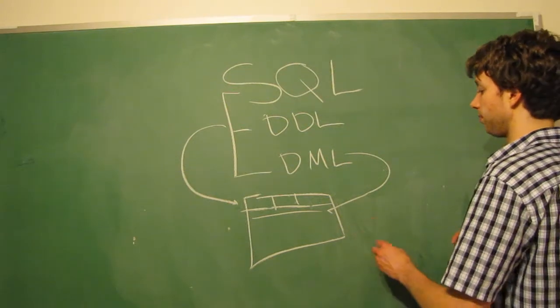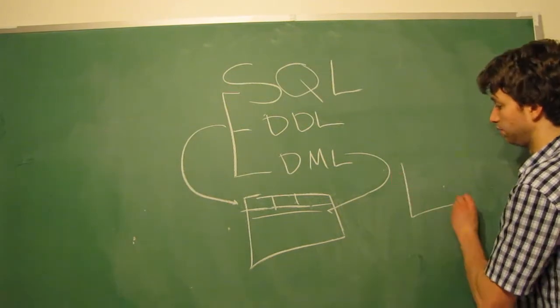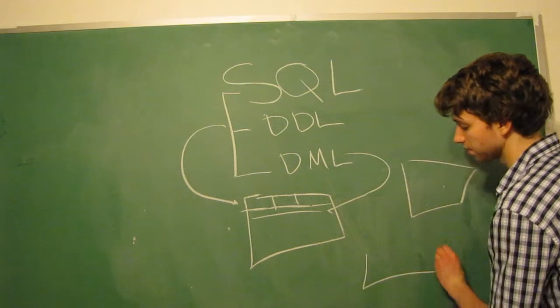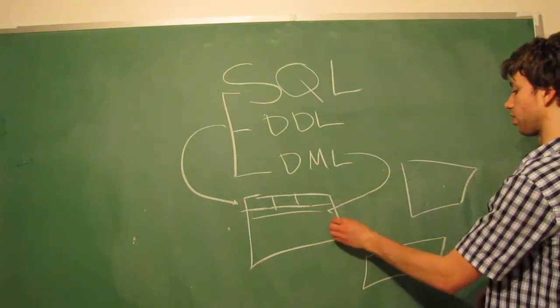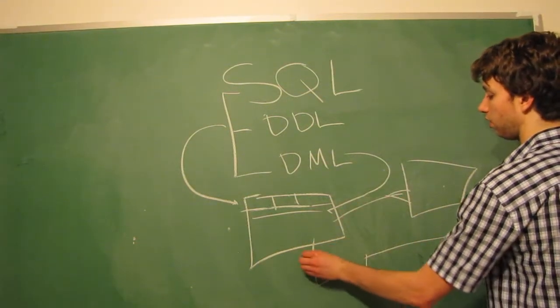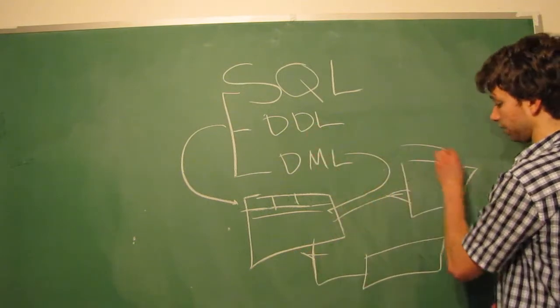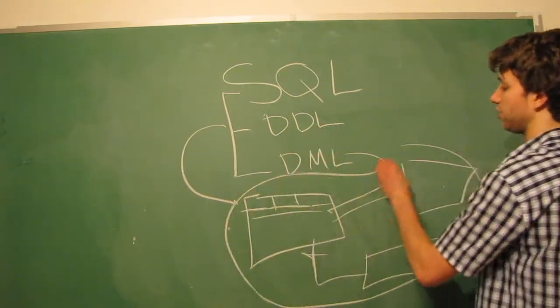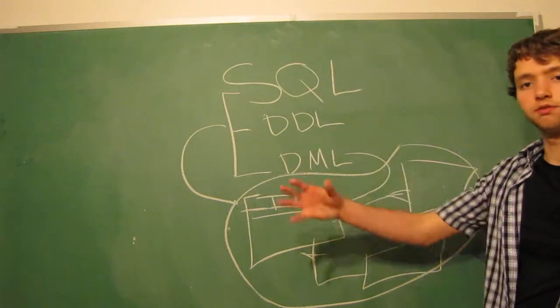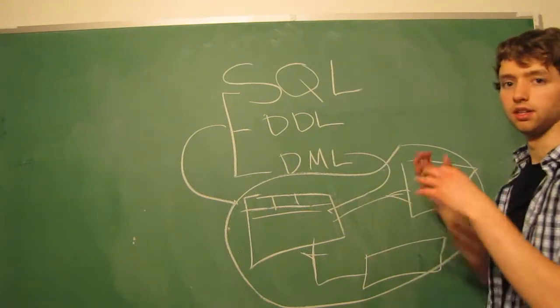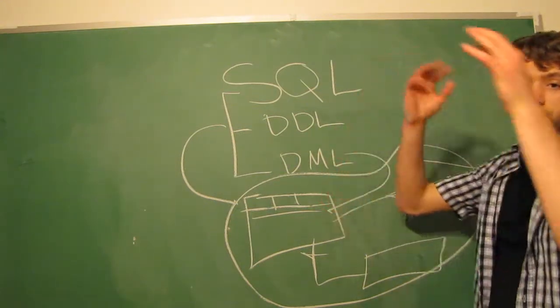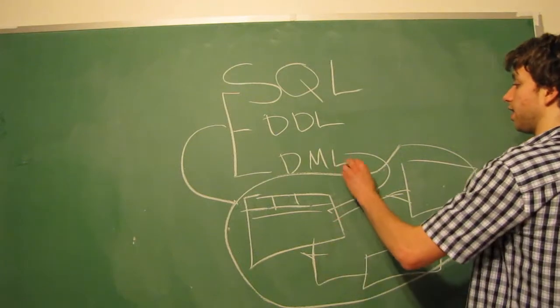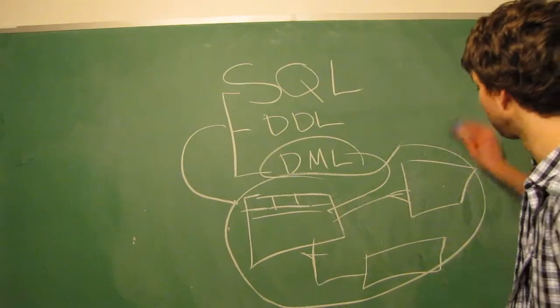So when you think of a table, and obviously if you have a big database, you're going to have multiple tables. Well, all of this structure and the connection between tables, that's all data definition language. It gets all of the main structure of the database. And then the data within the database is data manipulation language. So those are the two main categories.